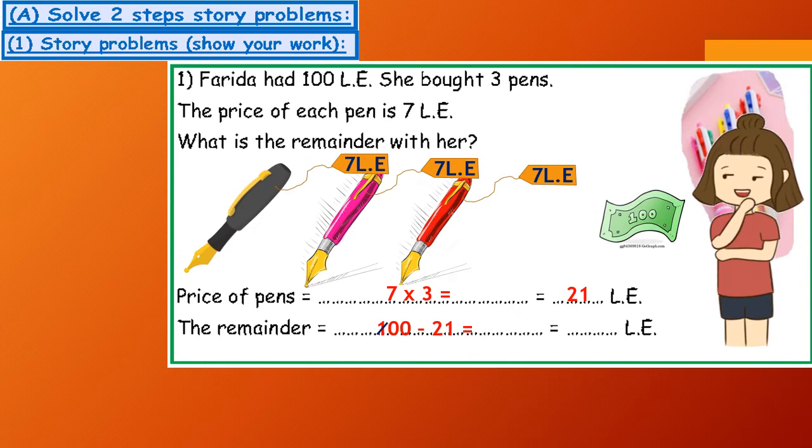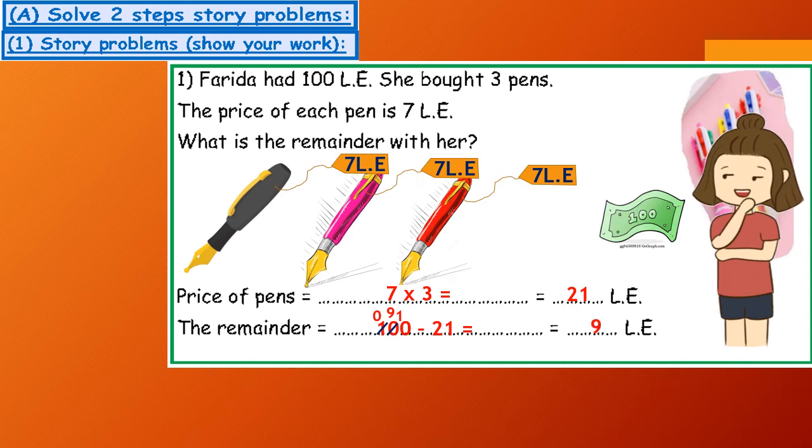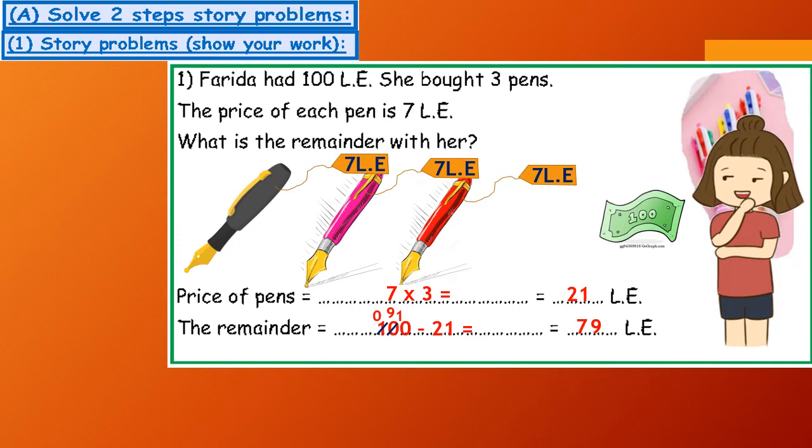Okay, 0 minus 1, I can't do it. So I will borrow 1 from the 1, it will be 0, and this 0 will be 9, and this 0 will be 10. 10 minus 1 equals 9, 9 minus 2 equals 7. So the remainder with her is £79.